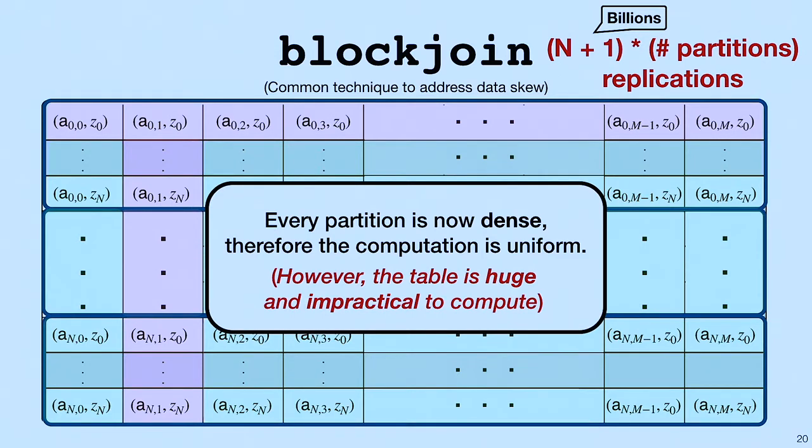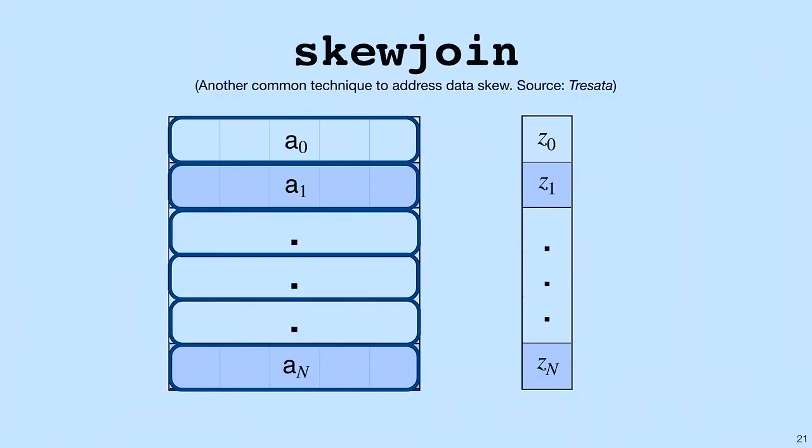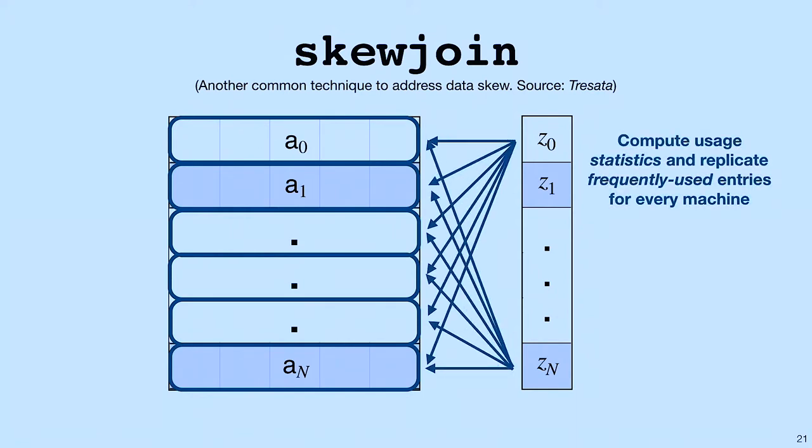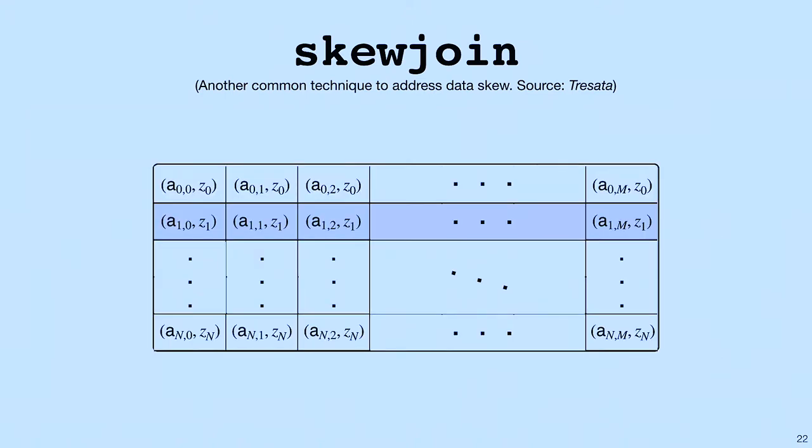The next one that we looked at was called SkewJoin. SkewJoin takes a more fine-grained approach. What it does is it first computes usage statistics and then only replicates frequently used entries for every machine. This sounds reasonable. And indeed, in most cases, it really is. However, again, for our system, it does not work.